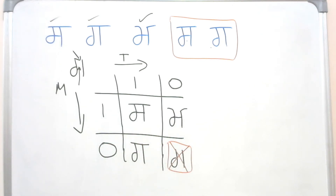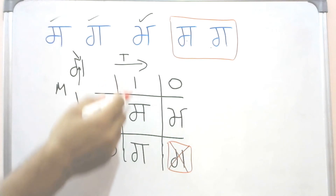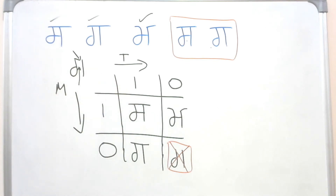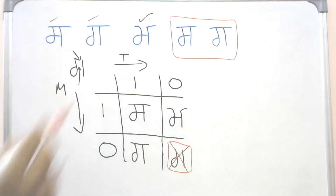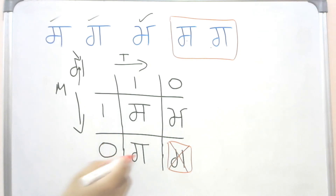So from a total of four possibilities, we have three valid ones, and those give us three different letters. To summarize: one line on the top and one line in the middle — Sassa. No line on the top, one line in the middle — Mamma. One line on the top, no line in the middle — Gagga. It is easy!